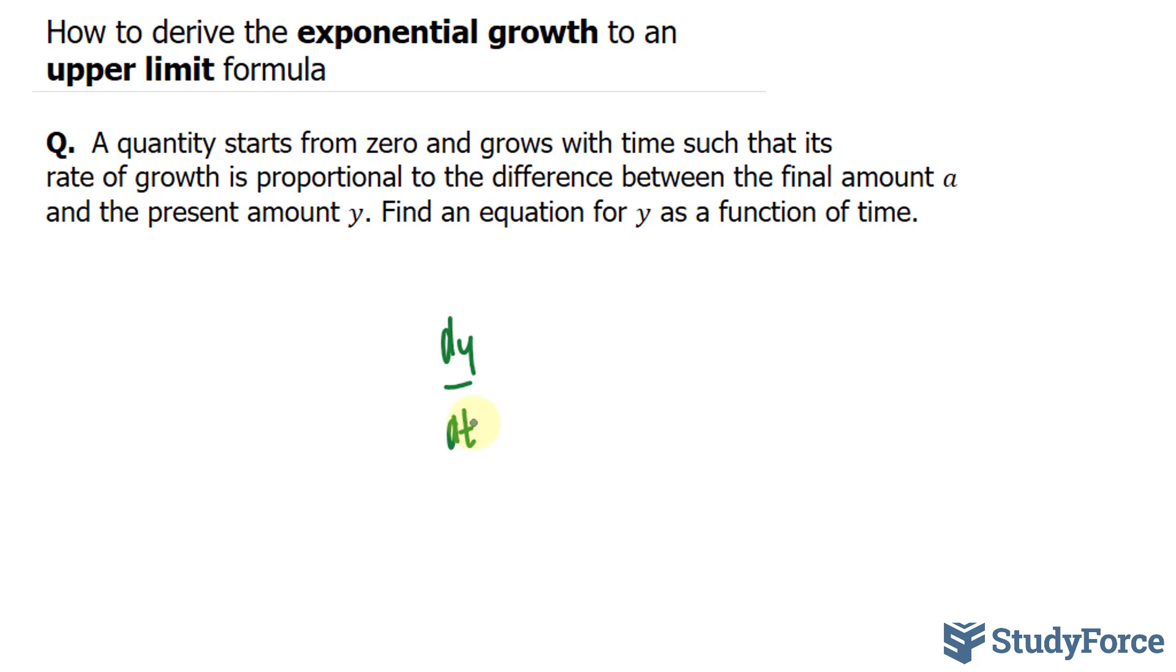We have dy over dt is equal to n, and I'll discuss what that is in a moment, times a, your original amount, minus y. n is the constant of proportionality here, and you have to include a constant whenever you create an equation from scratch.